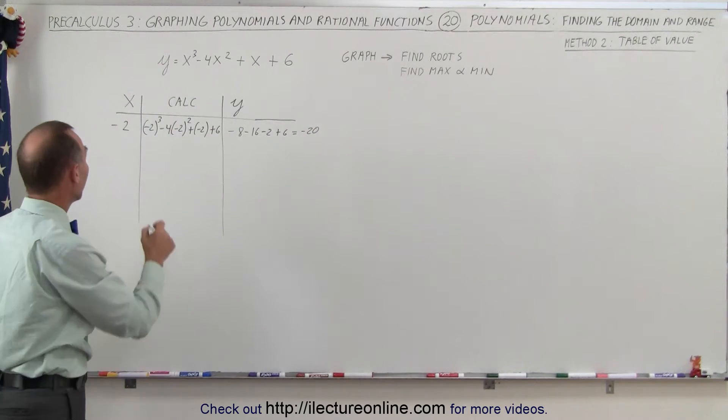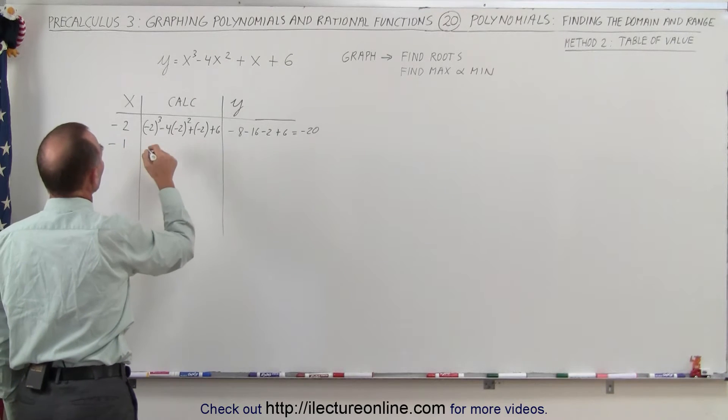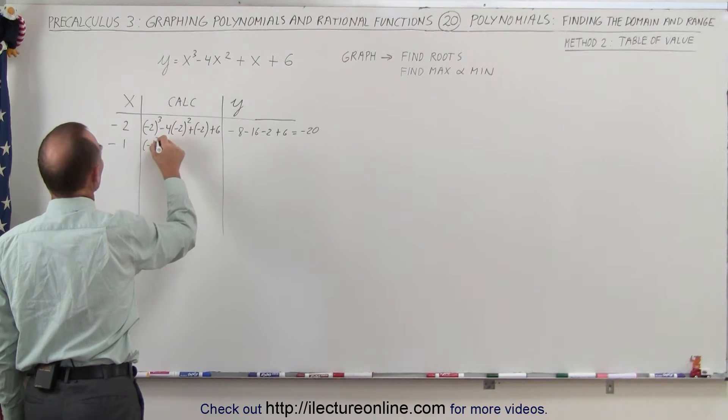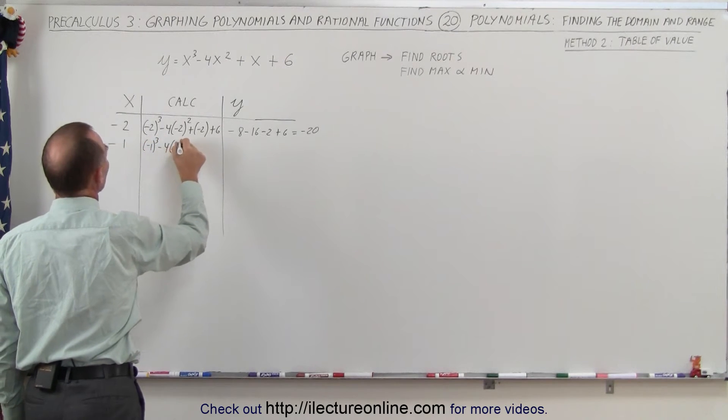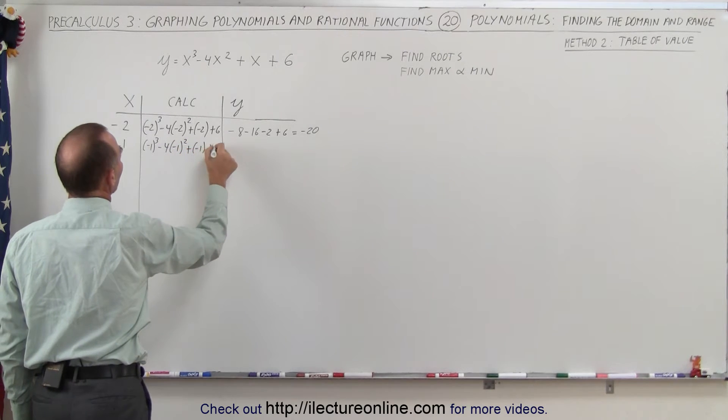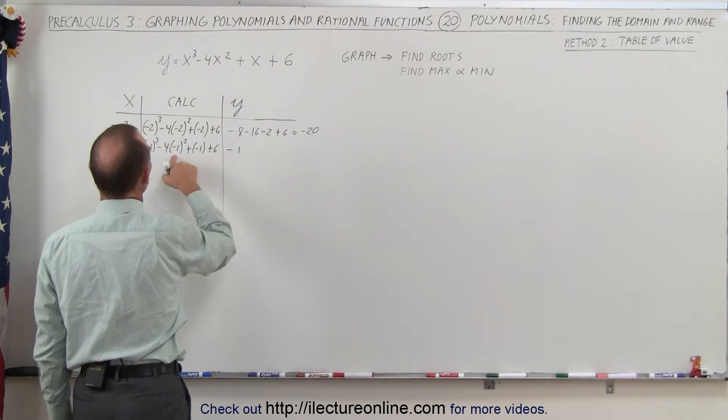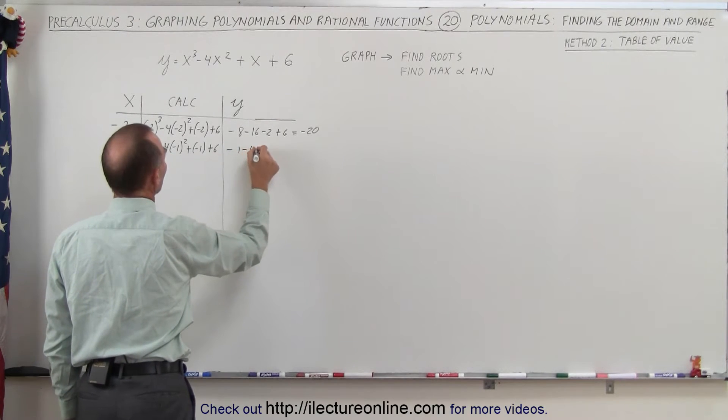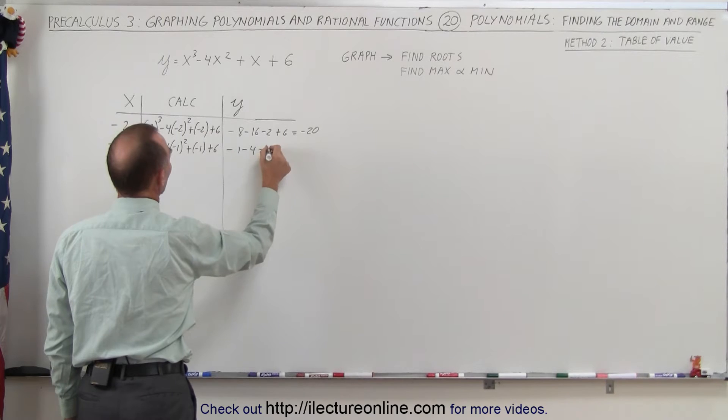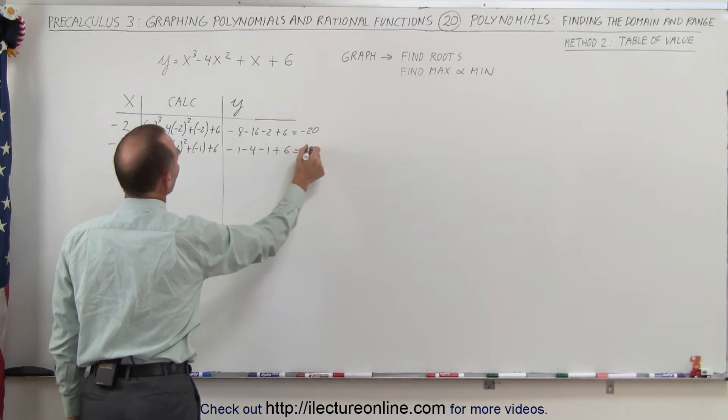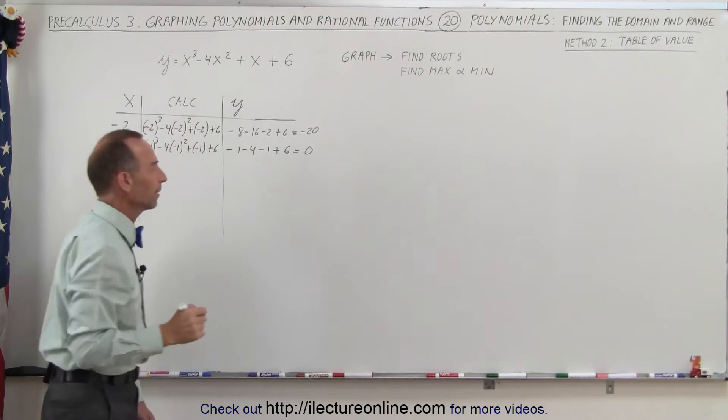Let's try the next value. How about minus 1? So we get minus 1 cubed minus 4 times minus 1 squared plus minus 1 plus 6 and so that would be equal to minus 1, that would be positive 1 times minus 4, that would be minus 1 and plus 6 and that is equal to 0. It looks like we found one of our roots right here.